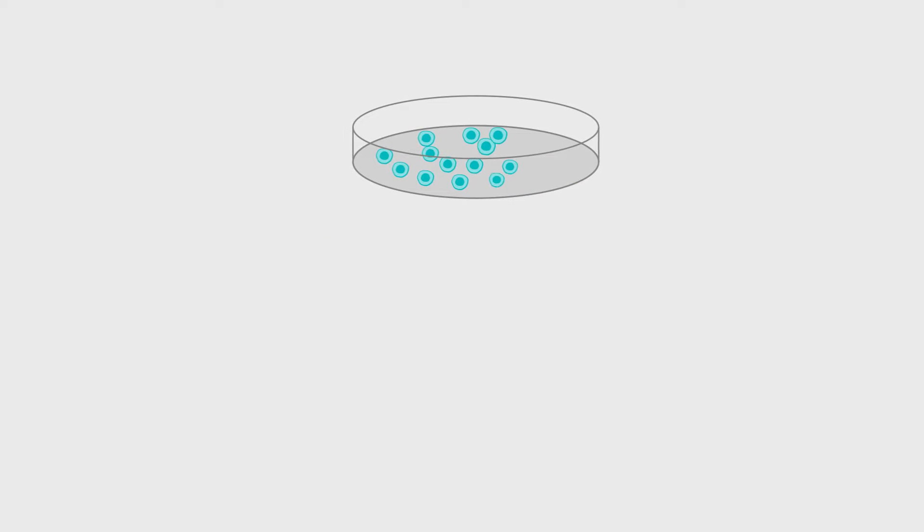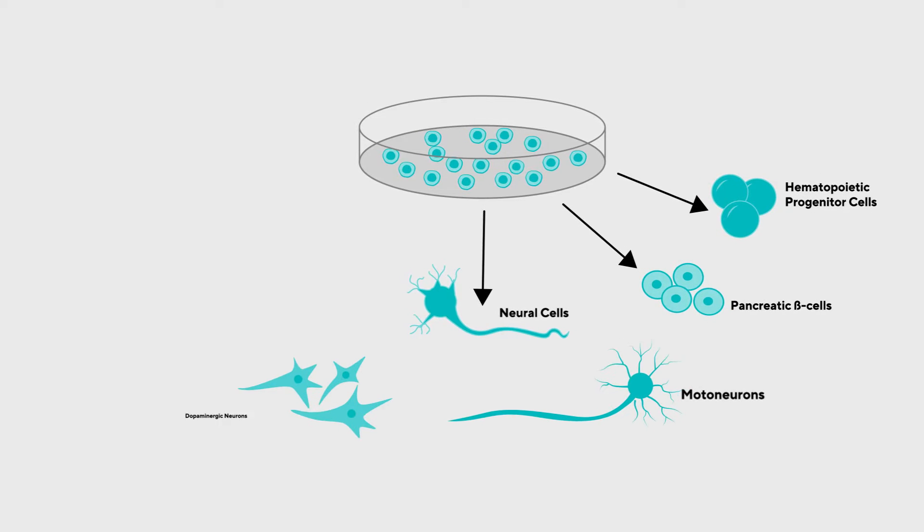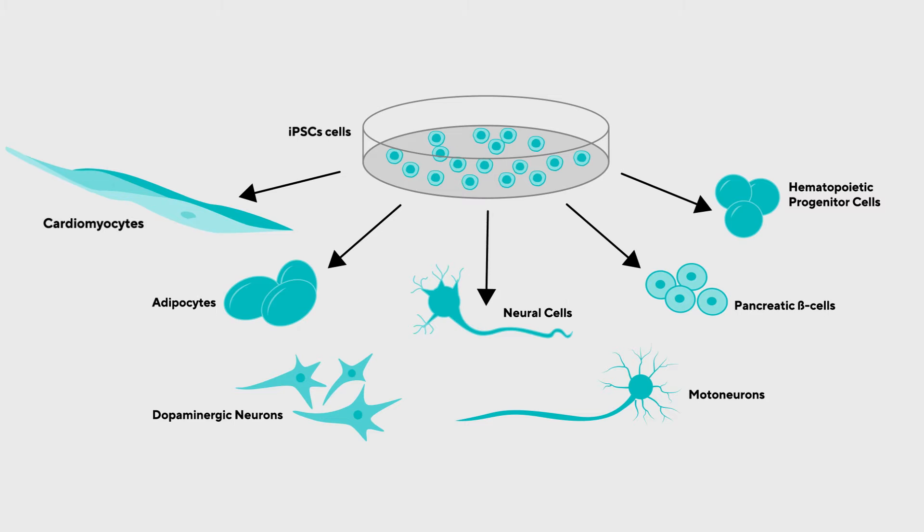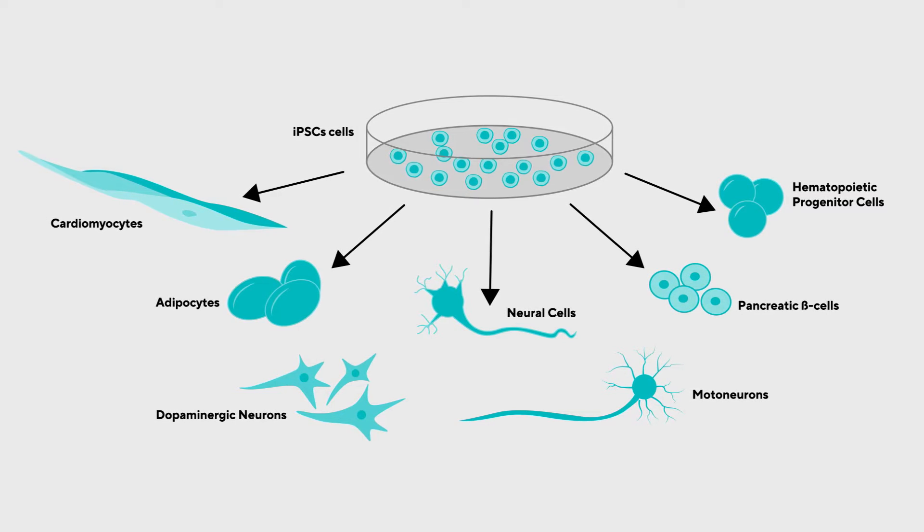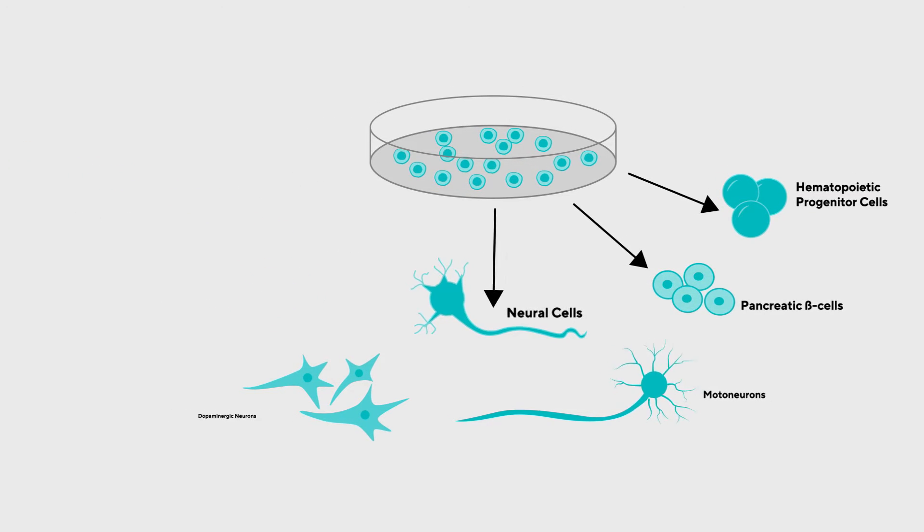Pluripotent stem cells, including iPSCs and embryonic stem cells or ESCs, have the innate ability to indefinitely self-renew and differentiate into any cell type.